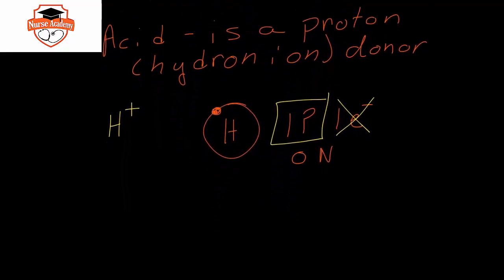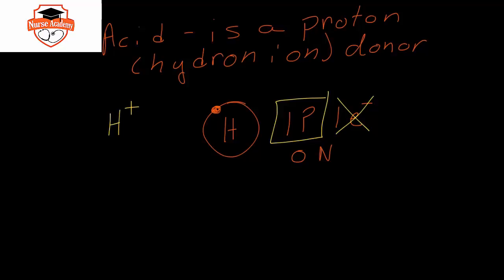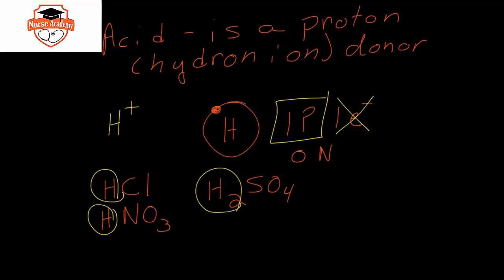Acids are commonly recognized when you're given their formulas as having the hydrogen in the front. Here we have hydrochloric acid, nitric acid, and sulfuric acid. They all have in common that the first element in the chemical formula is H.